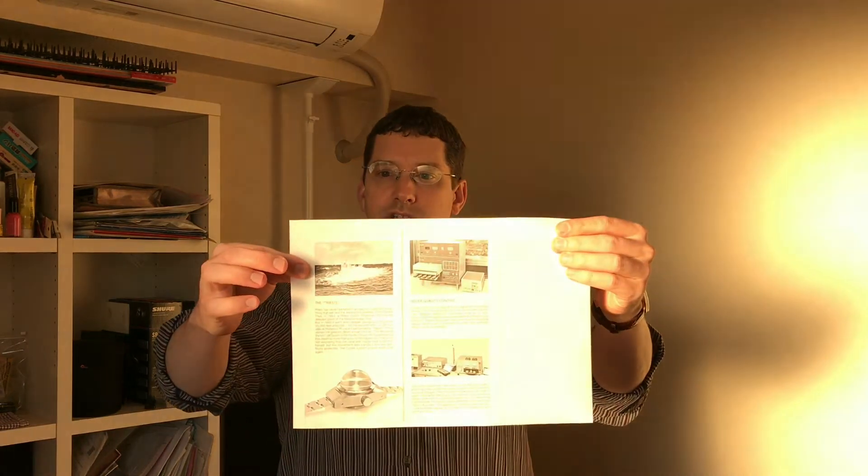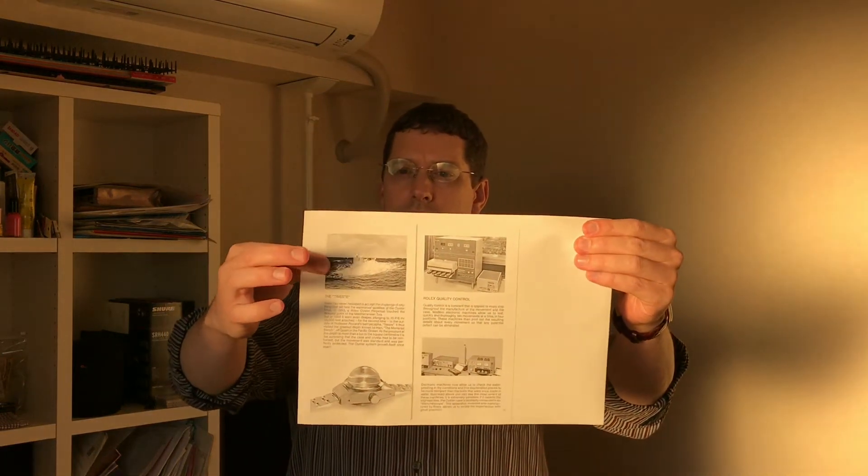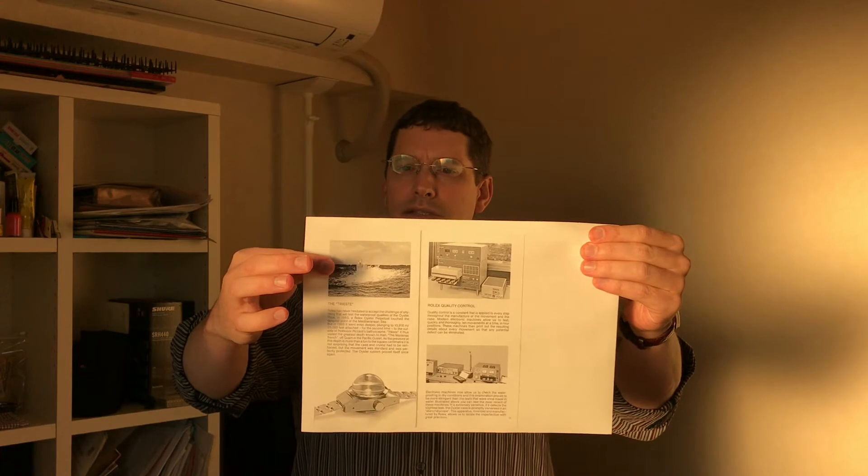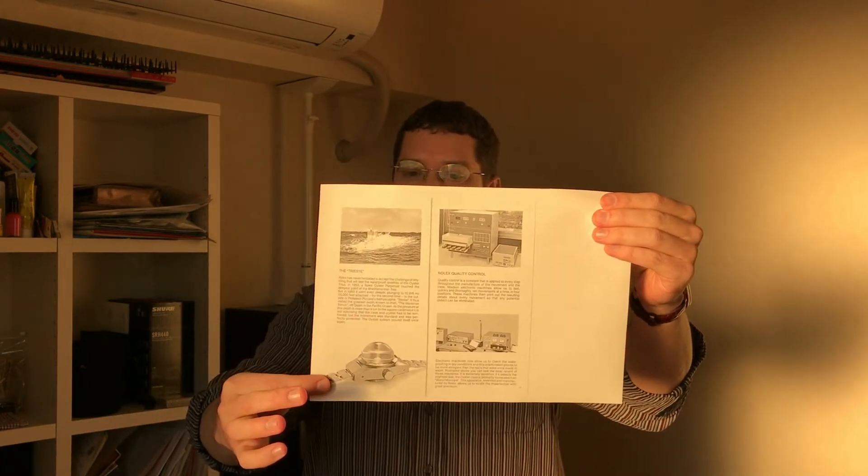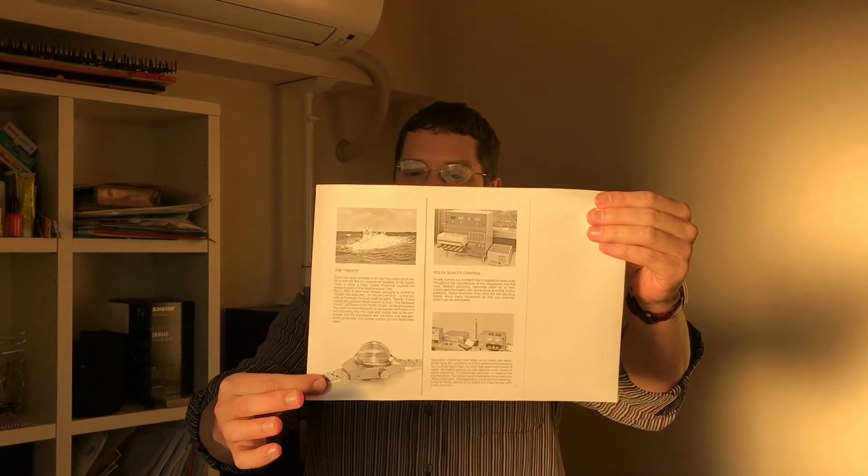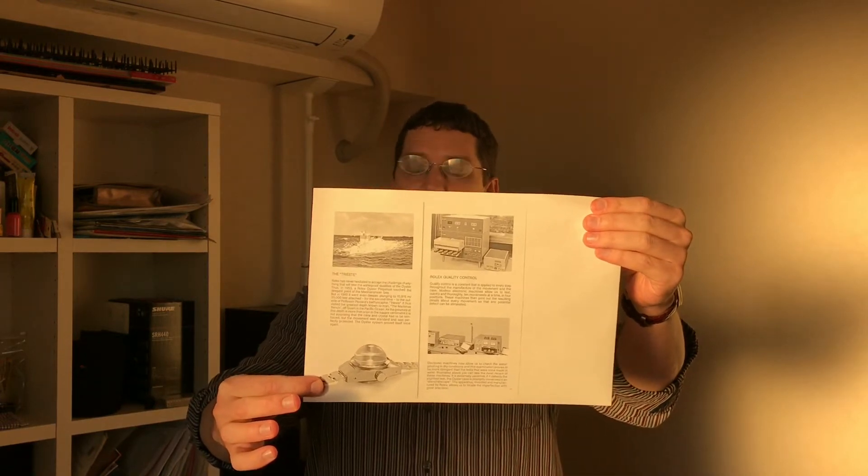This would be pages 10 and 11. You can see some of the illustrations. You've got the pictures, rather. You've got what looks like a submarine. You've got a, wow, look at the crystal on this watch. It's basically like half a sphere.